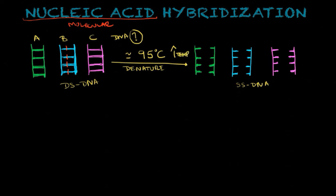Now the second step of nucleic acid hybridization is what we call incubation, and incubation is done at roughly 65 degrees. You can also call it renaturation. Why renaturation? Because what you're going to do now is turn these single-stranded DNA molecules back to their double-stranded DNA form.